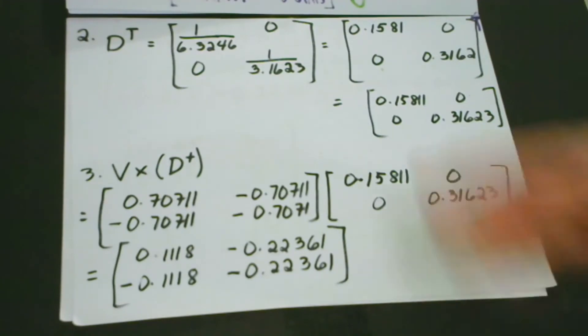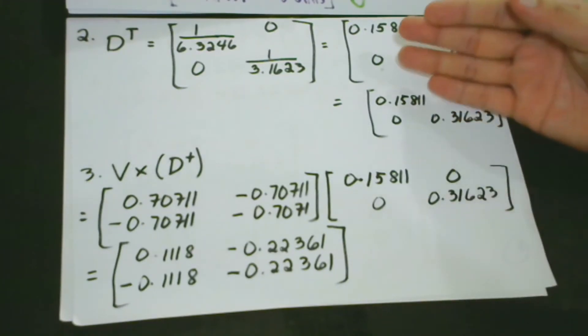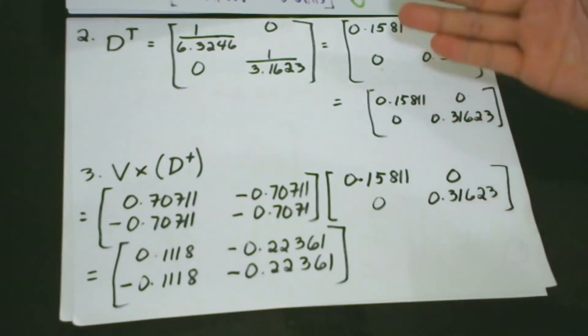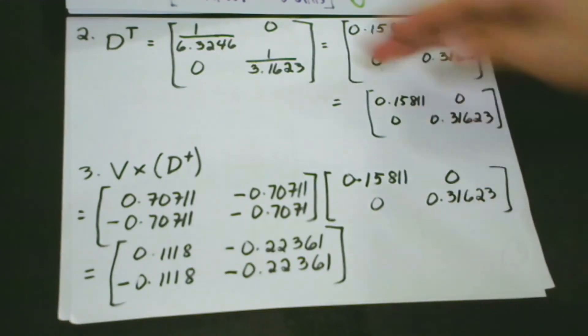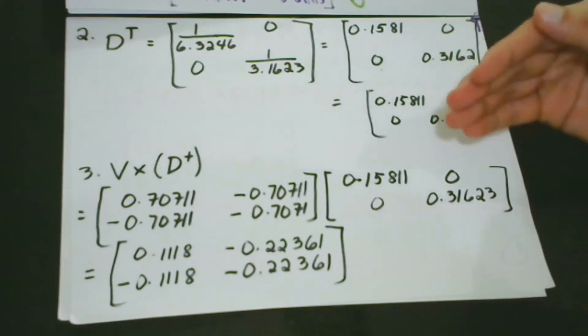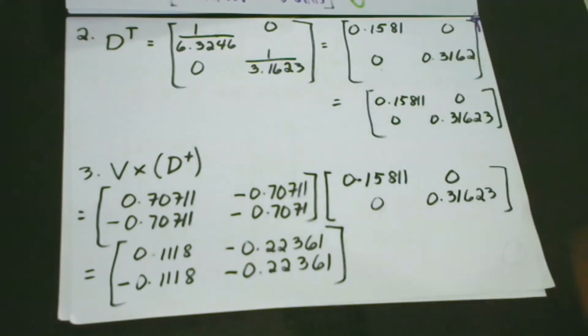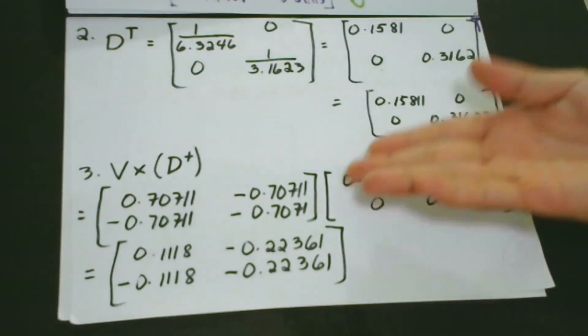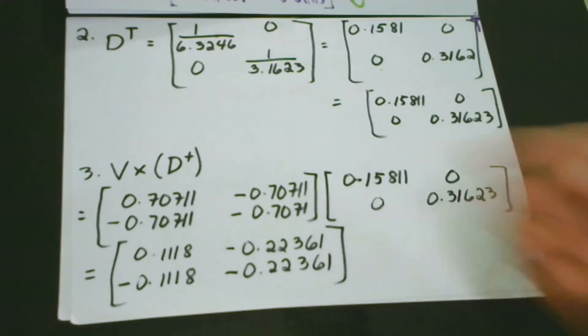As you could see, when we take the reciprocal of its non-zero values on the diagonal, this leaves all the zeros as they are. As you could see, nothing happens with the zero values, because we don't do anything with them.